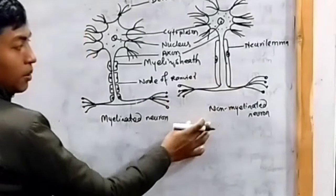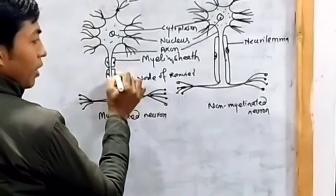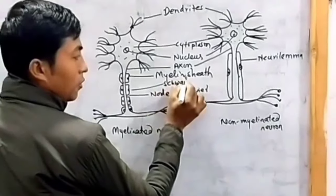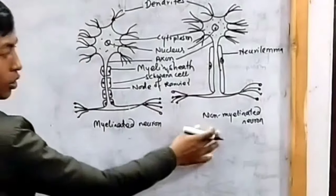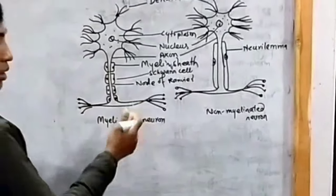For non-myelinated neurons, this is how each cell looks. These are the different types of neurons.